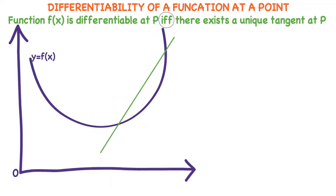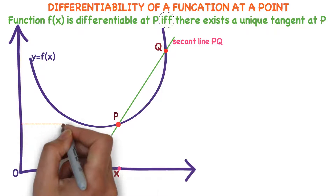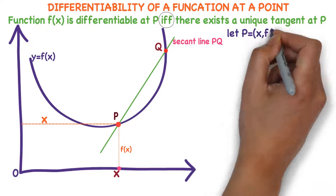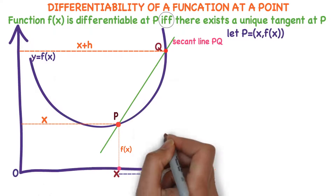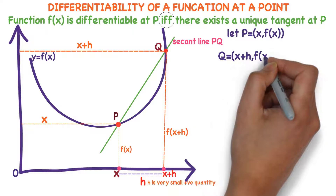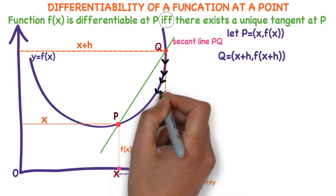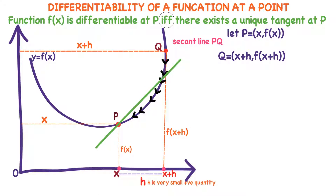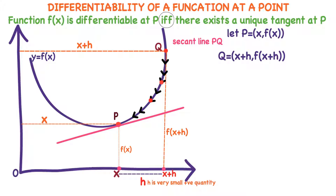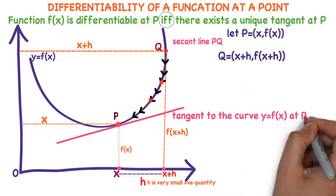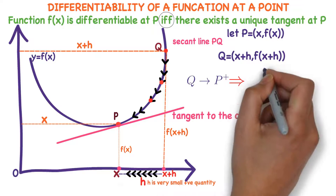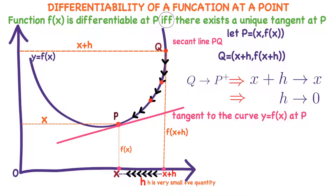Consider a secant line PQ. Point P is (x, f(x)). Point Q is at a distance of h units to the right of P, so Q is (x+h, f(x+h)). As Q approaches P from the right, observe the limiting position of secant line PQ — the secant line becomes tangent to the function at point P. As Q approaches P, h is approaching zero.